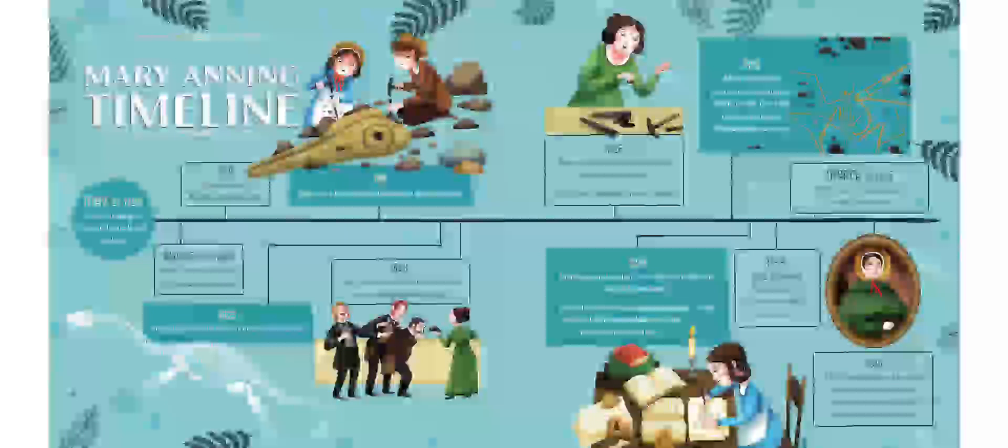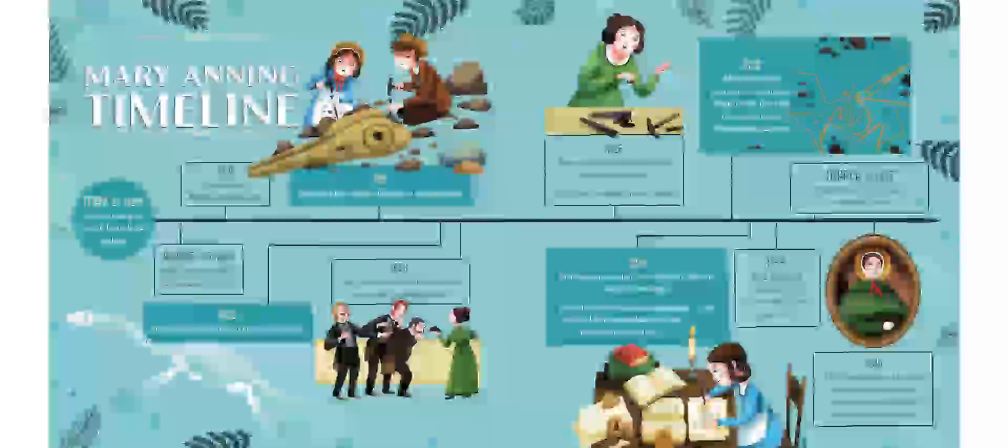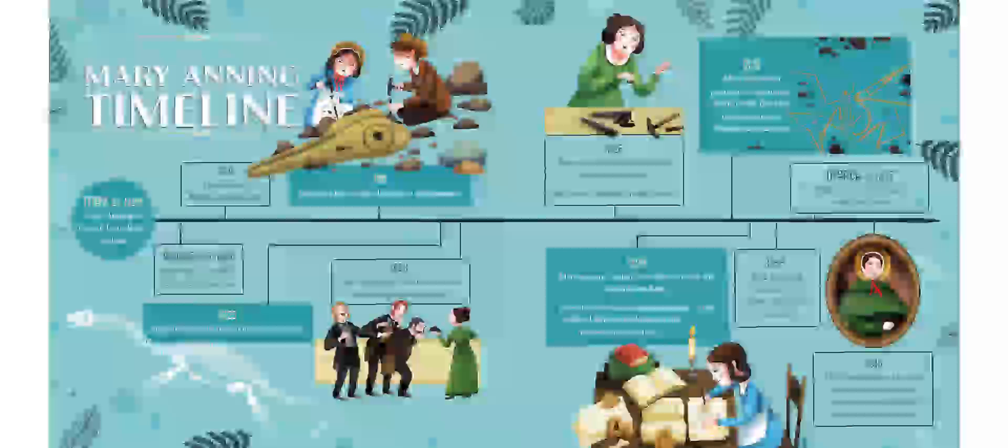In 1811, Mary and her brother discover an ichthyosaurus. In 1823, Mary discovers the first complete plesiosaurus. 1824, Mary announces that bezoar stones are actually fossilized poop. In 1826, Mary discovers a belemnite fossil containing dried ink. Mary opens Anning's Fossil Depot.